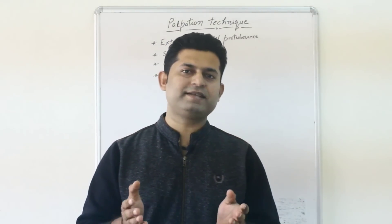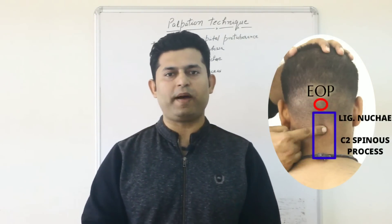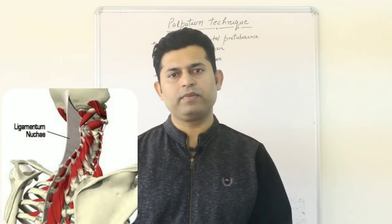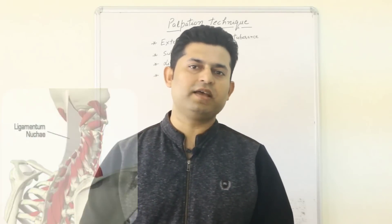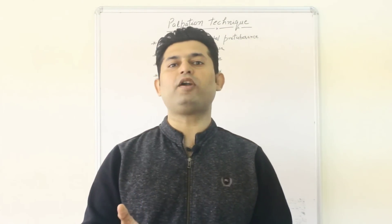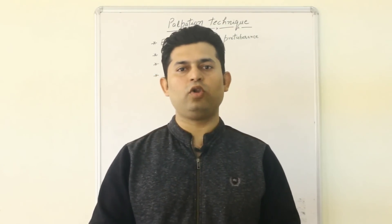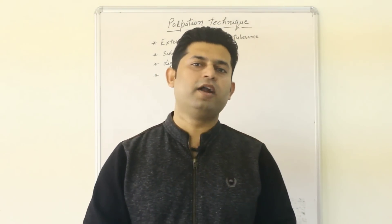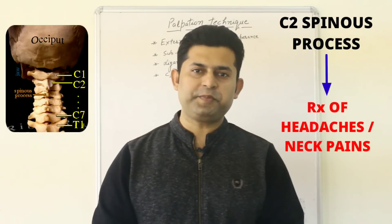Palpation of the suboccipital fossa is important as it serves as the landmark to palpate and localize the ligamentum nucae as well as the C2 spinous process. The ligamentum nucae is the ligament of the back of the neck — it is the continuation of the supraspinous ligament, extending from the C7 vertebra to the external occipital protuberance. It serves as attachment for the splenius capitis and trapezius muscles, and also serves to restrict flexion of the cervical spine. This ligament can undergo significant creep and hysteresis in chronic neck pain patients, so palpating it enables the therapist to deliver specific soft tissue manipulation techniques.